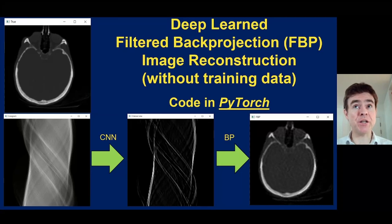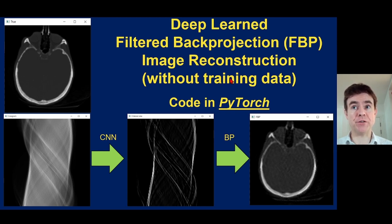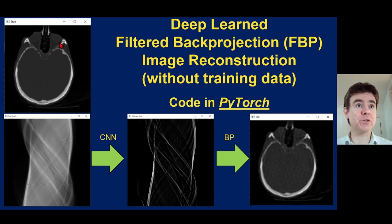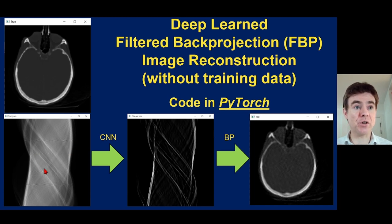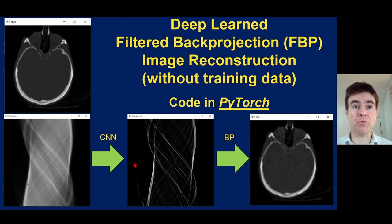In this video, I will explain how to code up deep learned filtered back projection for image reconstruction without using any training data at all. I'll be using PyTorch. We have a true object which I have forward projected to get a sinogram. This video is about starting from a sinogram and learning how to filter it using a convolutional neural network.